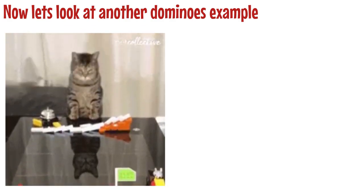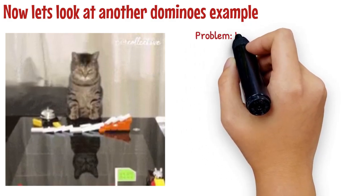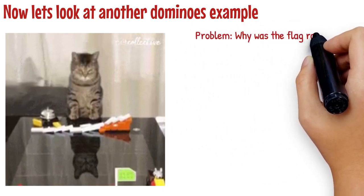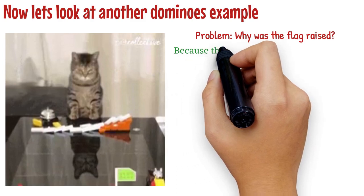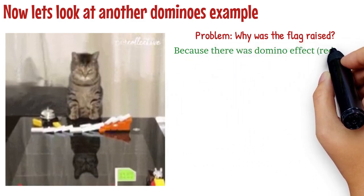Now let's do the RCA. Step 1, define the problem. Why did the flag raise? Because there was domino effect on red tiles at front of the table.